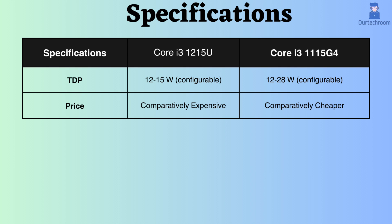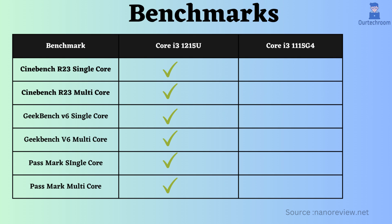The Core i3-1215U is comparatively more expensive than the Core i3-1215G4. Looking at benchmark comparisons, according to Cinebench R23 Single and Multicore, Geekbench V6 Single and Multicore, and PassMark Single and Multicore, the Core i3-1215U performs better.